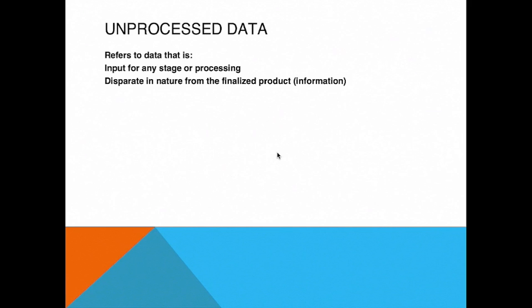Unprocessed data refers to data that is an input for any stage of processing or is disparate in nature from the finalized product, which would be information. So what does this mean? Let's say that we have a process, which we represent with this box. Call it P. And let's say that the result of this processing is I, some information. The unprocessed data is going to be the input into the process D. So we'll have a process, its input, which will be data, and the finalized product, which is I.